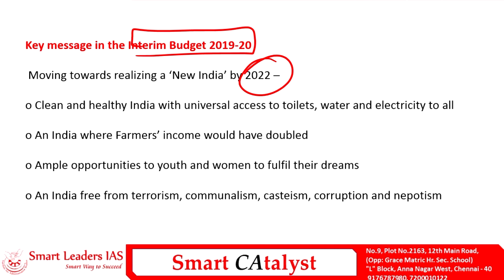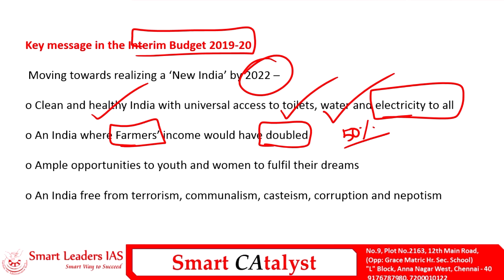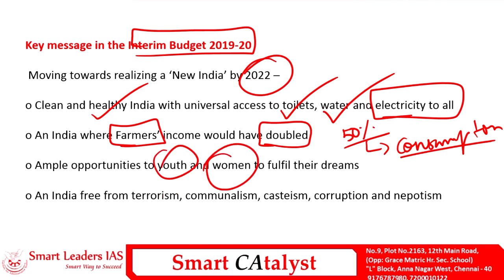The first pillar is creating a clean and healthy India by providing universal access to toilets, water, and electricity to every citizen. The government also plans to enhance the welfare of farmers by striving to double the farmers' income by the year 2022. Farmers, who are the primary producers, constitute about 50 percent of the Indian population. The government also aims to increase opportunities for both youth and women and to establish India free from terrorism, communalism, casteism, corruption, and nepotism.